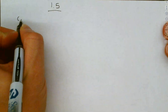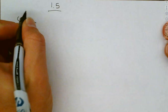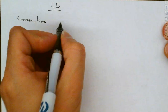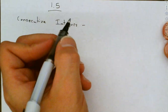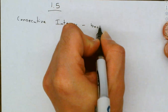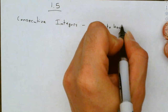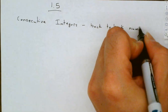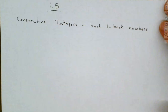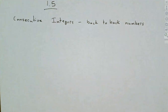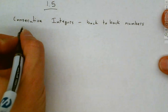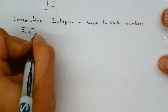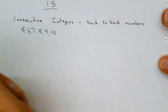We're going to talk about consecutive integers. What are consecutive integers? They are back-to-back numbers. So we're going to look at consecutive integers — these are our back-to-back numbers. When I talk about back-to-back consecutive integers, they're back-to-back numbers again, and so that would be like 5, 6, 7, 8, 9, 10, and so on.